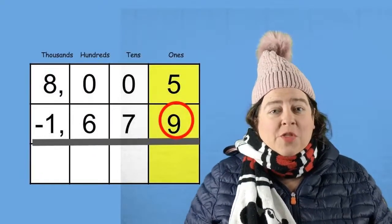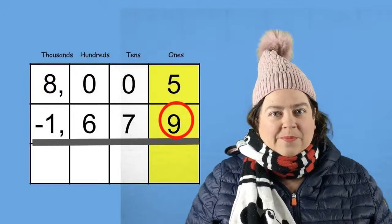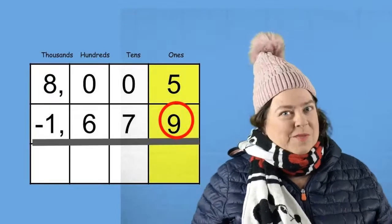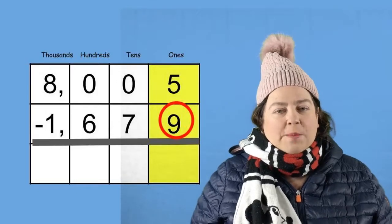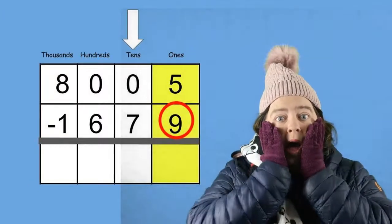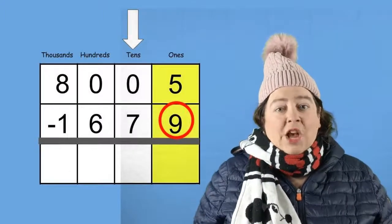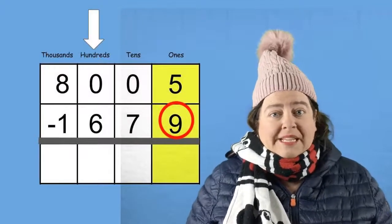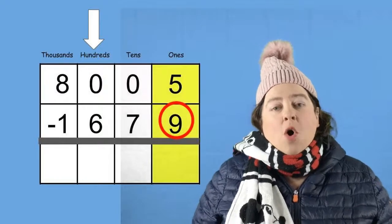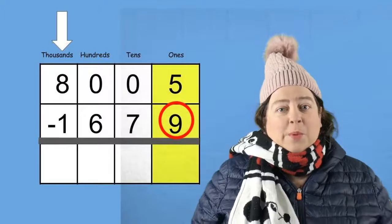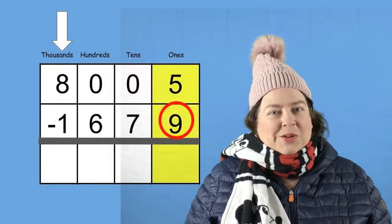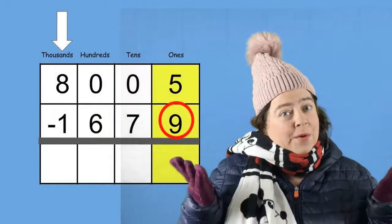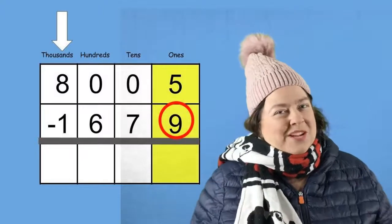For our next step, we're going to check on the ones place, just like we did before. We'll notice that the nine is on the bottom, which is on the floor. So say the rhyme with me. If there's more on the floor, go next door and get some more. But oh no! We have a zero in the tens place. So we can't get anything from the tens place. We can't even get anything from the hundreds place in this problem. So in this example we have to go all the way to the thousands place to find some more. So that's exactly what we're going to do. We're going to cross out the eight and take away one thousand. What is that going to leave us with? Well let's throw a snowball and find out.